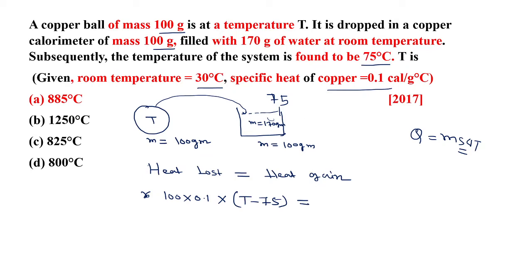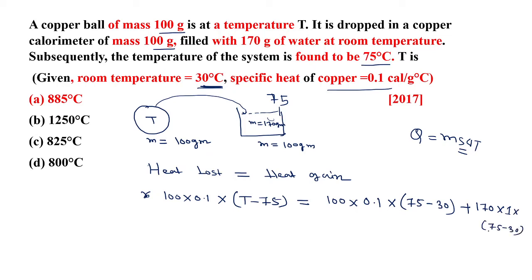The heat gained goes to the calorimeter and the water. Heat gained by the calorimeter: mass is 100 gram, specific heat of copper is 0.1, change in temperature is 75 minus 30, since the room temperature is 30 degree centigrade. Heat gained by the water: mass is 170 gram, specific heat of water is 1, and change in temperature is also 75 minus 30.